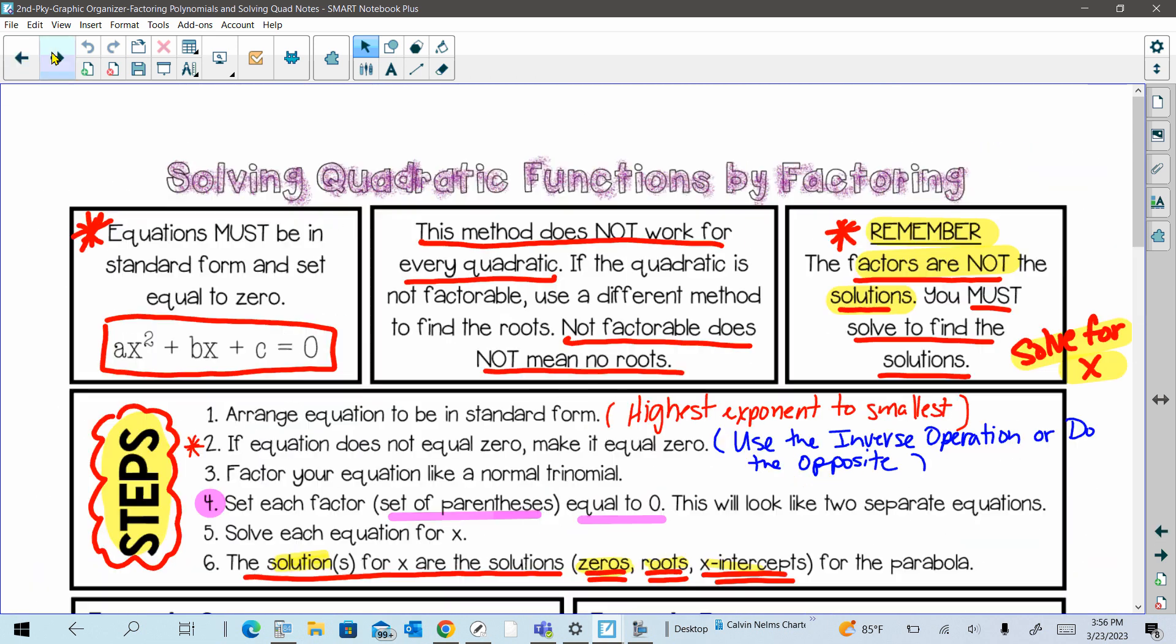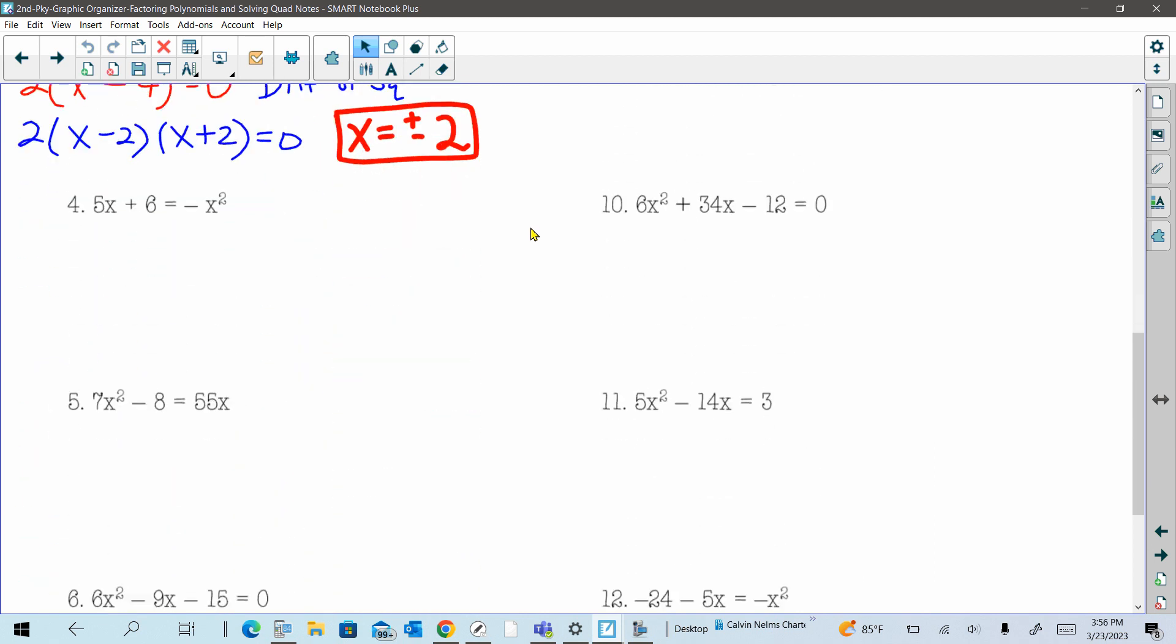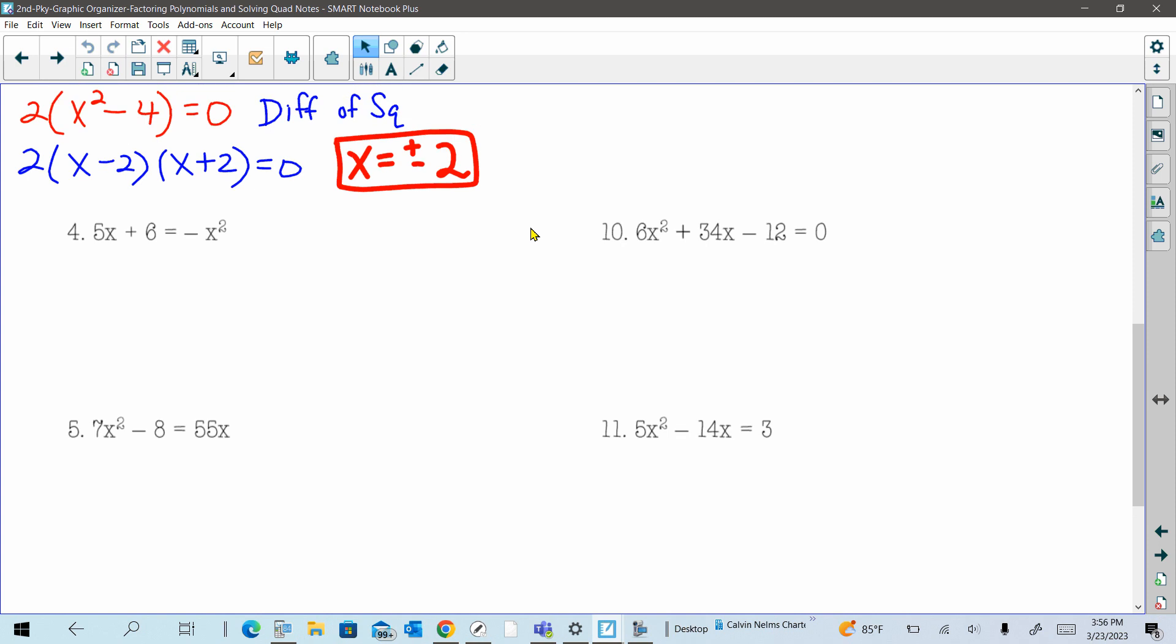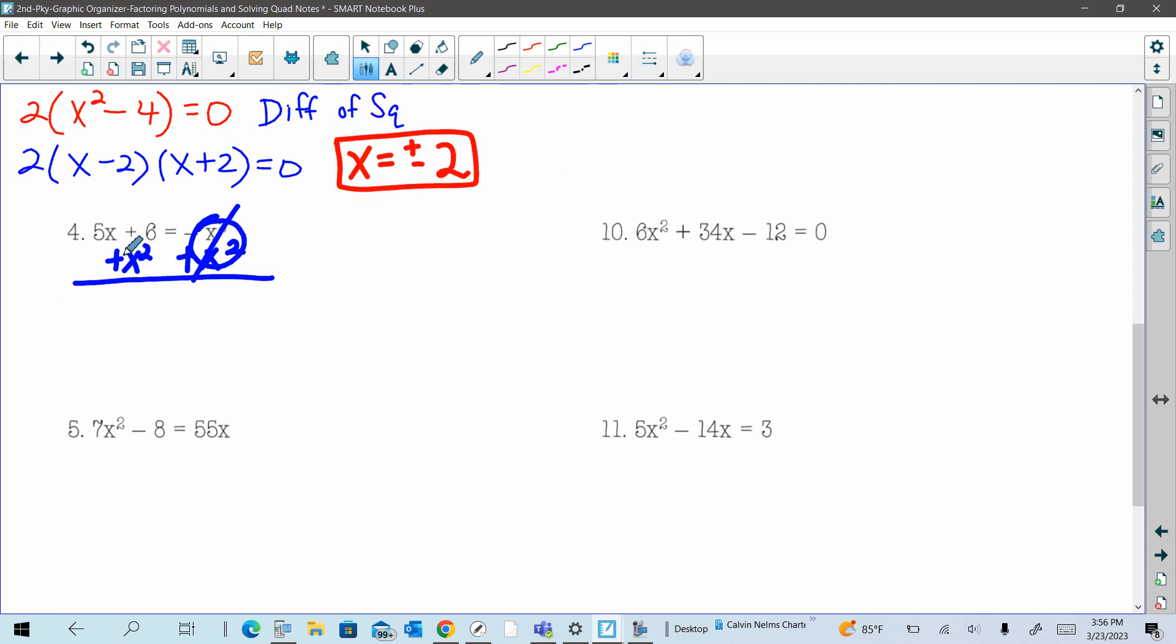Number four is a prime example of how we have to first get it equal to zero. This is not set equal to zero. Right here it's equal to this negative x squared. So to make this zero, I do the opposite. So I'm going to add x squared to both sides of the equal sign. And now this right side is going to become zero. And we're going to rewrite this expression in standard form highest exponent comes first. So that would be x squared plus 5x plus six equals zero.